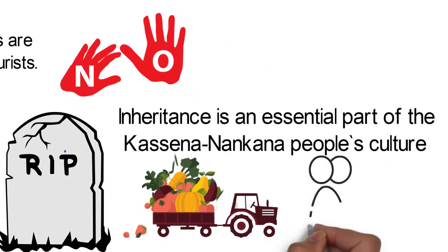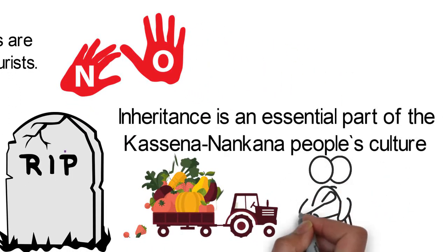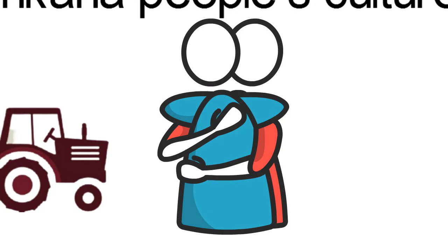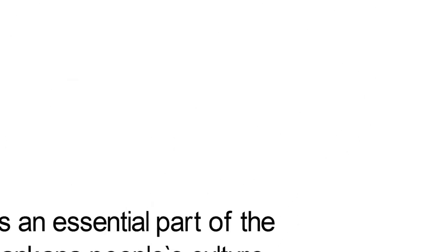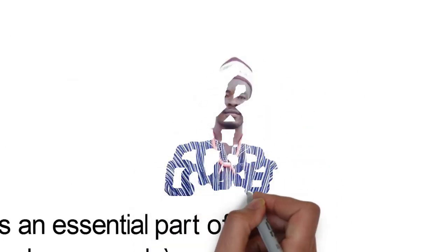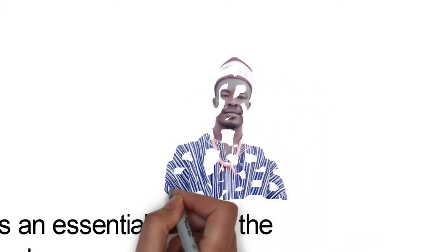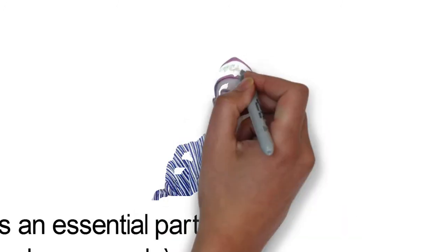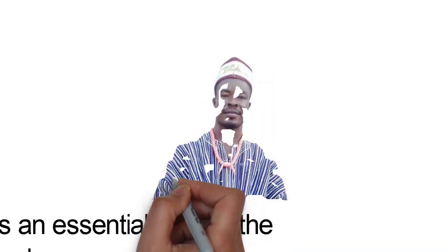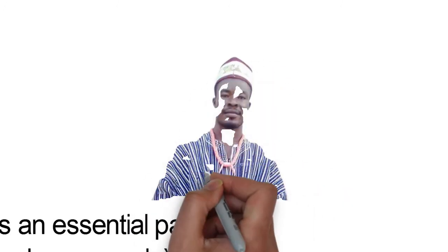The peaceful coexistence among the Kasena Nankana people is a major reason neighboring communities admire them. Despite their various religious beliefs, they have lived together harmoniously. The Kasena Nankana culture remains one of the most celebrated in Ghana for its richness and global recognition. Fortunately, the natives have done well to uphold their well-celebrated ways of life.